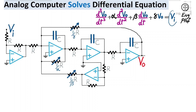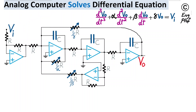Vi is the input voltage to the circuit, applied at the input, and then the circuit automatically solves the differential equation. Vout reported at the output is the solution of the differential equation. It's a very interesting analog computer.